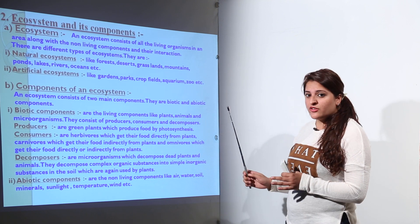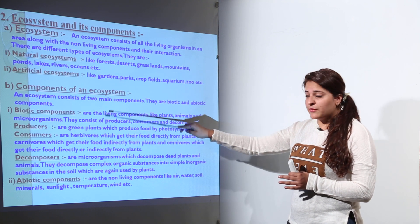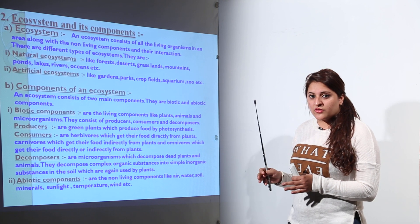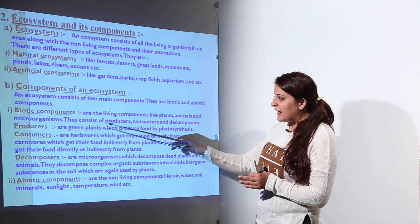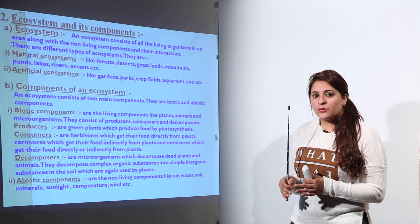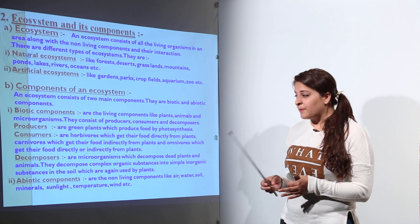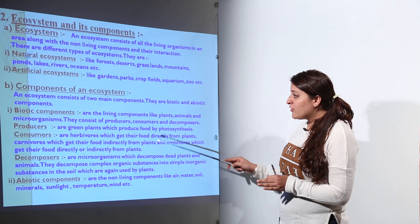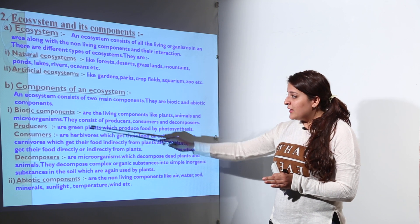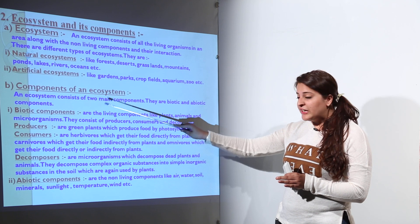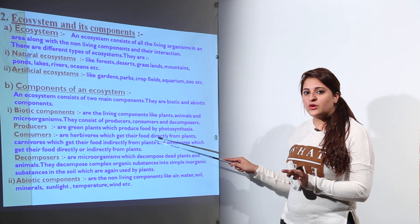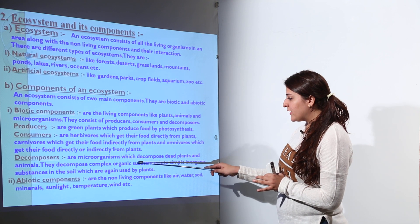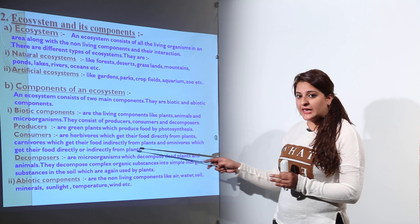Moving on to the various components of an ecosystem. The first component is the biotic component. Biotic refers to any living thing, so biotic components comprise all living components of an ecosystem. The first category is producers — organisms able to synthesize food, such as green plants, which produce their own food through photosynthesis. The next category is consumers — herbivores that feed on producers. Decomposers, like microorganisms, decompose dead plants and animals.